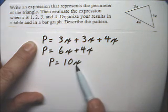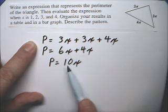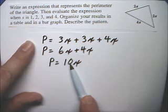So, obviously, when x is 1, p is 10. When x is 2, it's 20. 3 is 30. And 4 is 40.